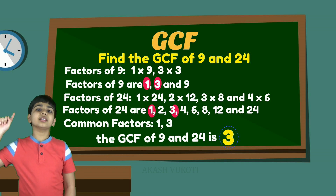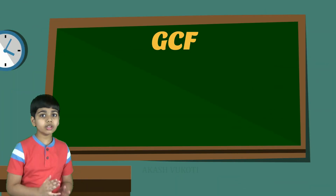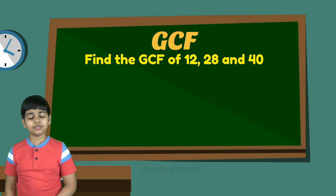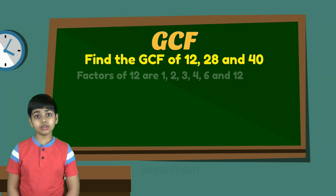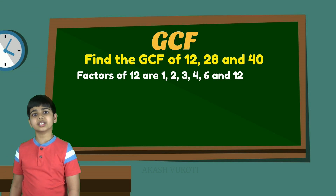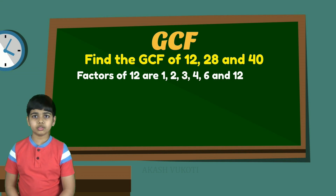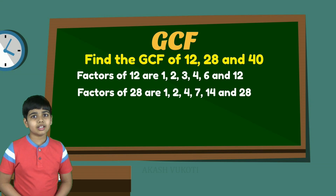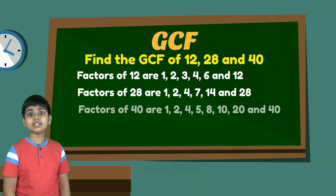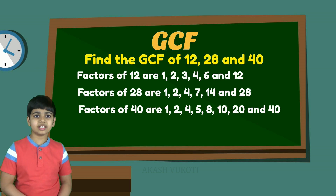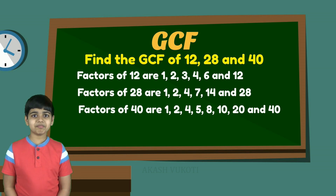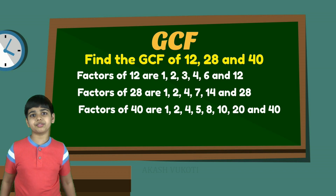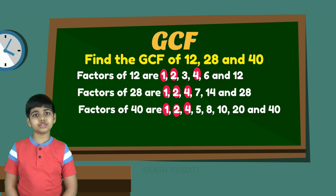Now, let's take one last example: 12, 28, and 40. We're going to work with 3 different numbers for this GCF. The factors of 12 are 1, 2, 3, 4, 6, and 12. The factors of 28 are 1, 2, 4, 7, 14, and 28. The factors of 40 are 1, 2, 4, 5, 8, 10, 20, and 40. Now, there are a lot of factors for these, so we need to narrow this down to our common factors, and they are 1, 2, and 4.